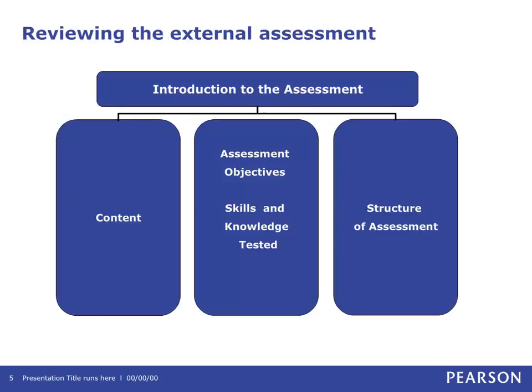This slide reviews the external assessment for the BTEC First in Music, Unit 8 Music and Production Analysis, covering content, assessment objectives, skills, knowledge tested, and the structure of assessment. The examination has three sections covering two learning aims: exploration of musical styles and genres, and production techniques used in music through critical listening. Questions on the paper cover Level 1, Level 2 Pass, Level 2 Merit, and Level 2 Distinction. This qualification is Level 2 standard, equivalent to GCSE A to C standard.